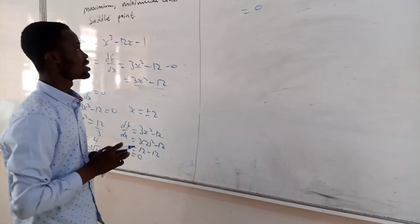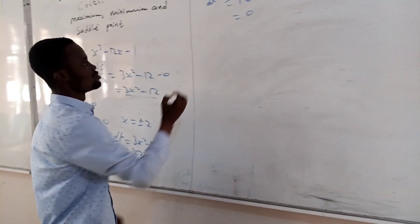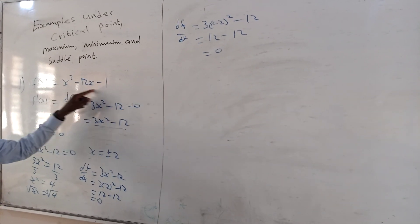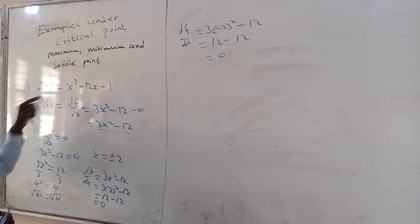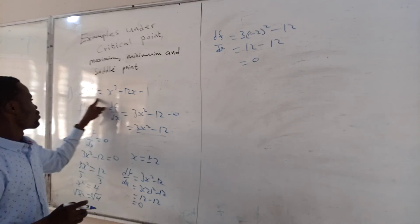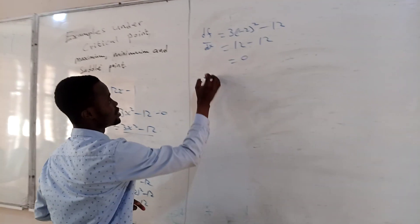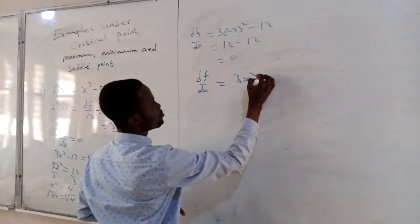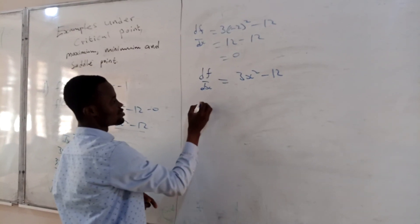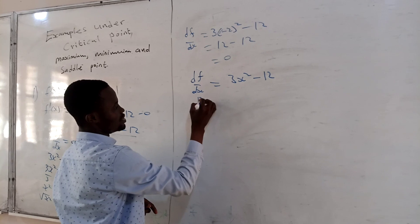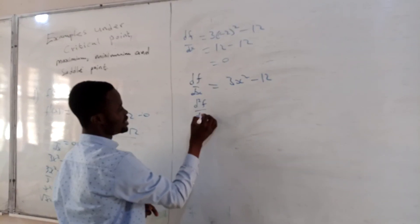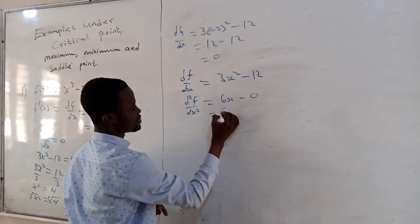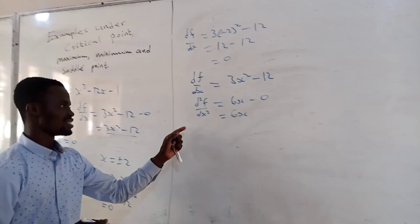Now let's find the maximum, minimum, and saddle point. To do this, you find the second derivative of the first equation. We already have the first derivative, which is 3x² minus 12. The second derivative, d²f/dx², is equal to 6x minus 0, which is simply 6x.